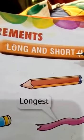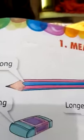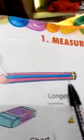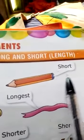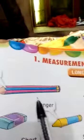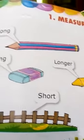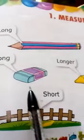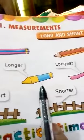Long means long and short means short. This is long. L-O-N-G, long. This object is long and that is short. This object is long and small. This object is long, longer, and longest. This object is long.